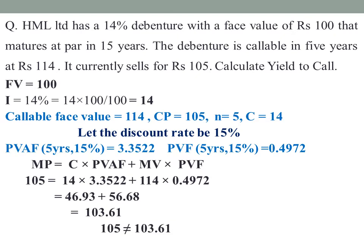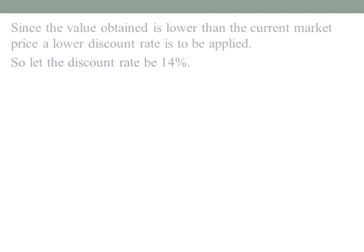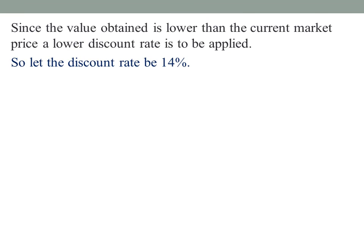Since the left-hand side (105) does not equal the right-hand side (103.61), we need to adjust. When the computed value is lower than the market price, we apply a lower discount rate. So we now apply 14%.